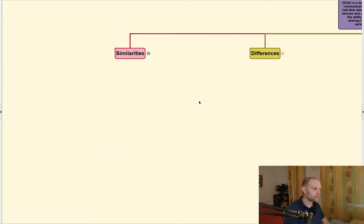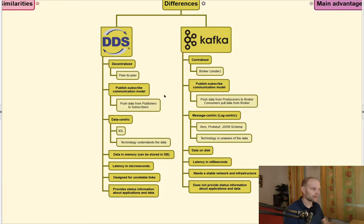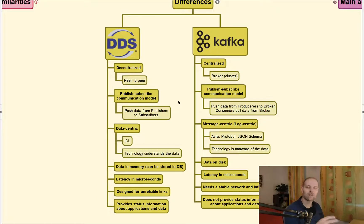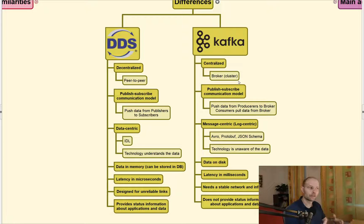Let's go to differences. DDS is fully decentralized because it's peer-to-peer communication — the participants in the system are discovered automatically. On the other hand, Kafka is centralized because there is a central broker. This broker can be clustered with a lot of brokers, but you still need to have information about where the cluster is.